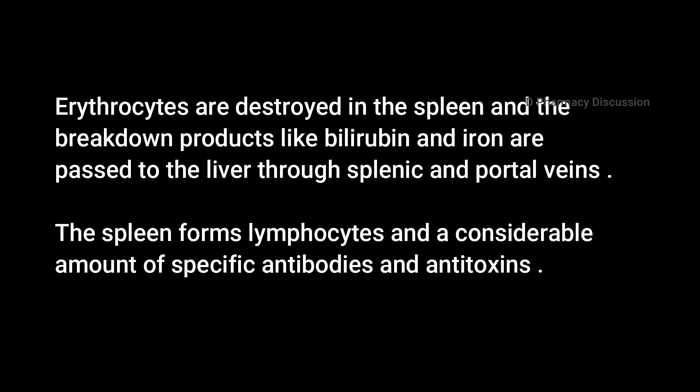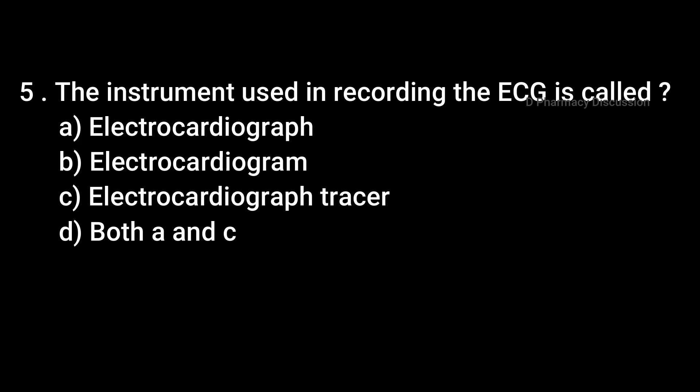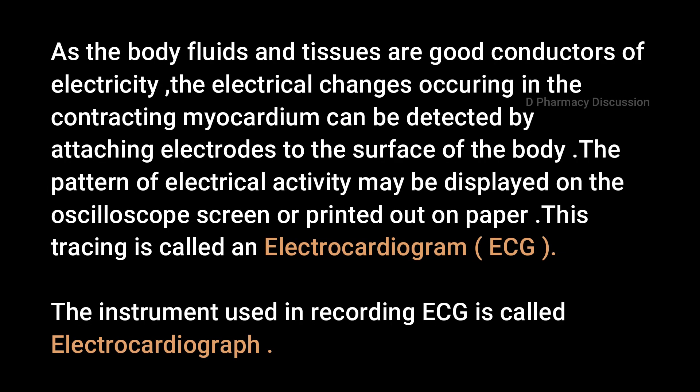The spleen also forms lymphocytes and a considerable amount of specific antibodies and anti-toxins. Question 5: The instrument used in recording the ECG is called — Option A: Electrocardiograph, B: Electrocardiogram, C: Electrocardiograph tracer, D: Both A and C. Correct answer is Option A: Electrocardiograph. As body fluids and tissues are good conductors of electricity, electrical changes occurring in the contracting myocardium can be detected by electrodes attached to the body surface. The tracing is called an electrocardiogram (ECG) and the instrument used in recording ECG is called an electrocardiograph.